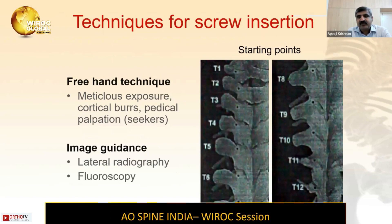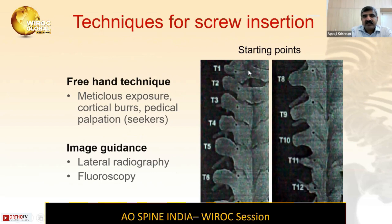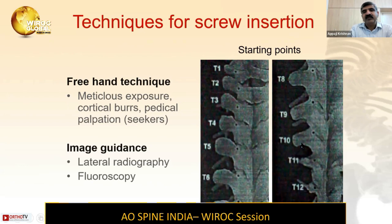There are two techniques of insertion: freehand technique and image guidance such as lateral and anterior fluoroscopy. The freehand technique requires meticulous exposure, cortical burr, and pedicle palpation seekers. The entry points from T1 to T7 are marked as shown in this picture, and then the point moves slightly inferior and slightly medial from T8 to T12. From T1 to T7, the point is at the upper end of the transverse process where the superior facet, transverse process, and lamina meet. From T8 to T12, it is slightly inferior and medially placed.